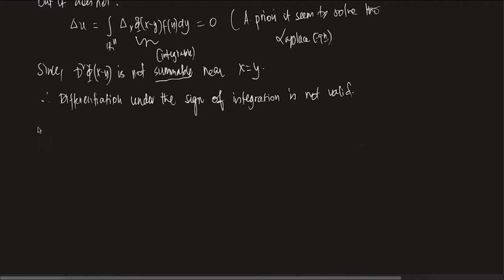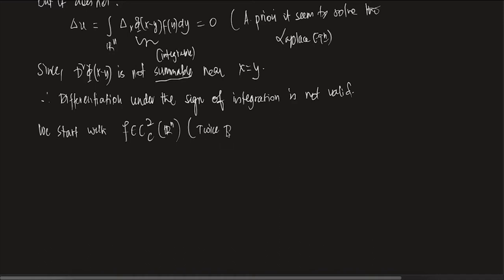So this is the theorem. We start with assumptions on f. Essentially, we start with f which is C² (or C∞) with compact support in ℝⁿ — twice differentiable with compact support.